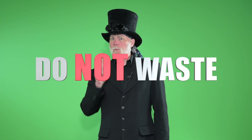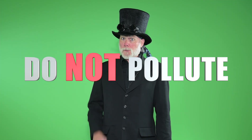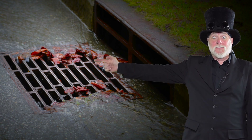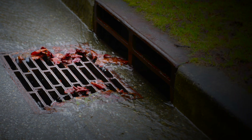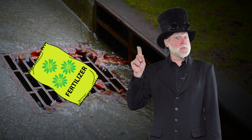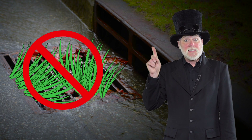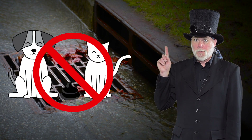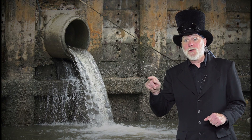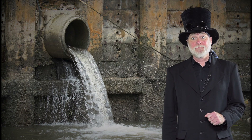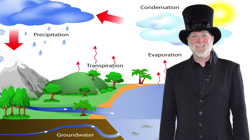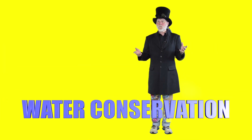So it's really important that we never waste water or pollute it. For example, nothing should ever be dumped into storm drains — no trash, no motor oil, no fertilizers, no grass clippings, and no pet poop — because that storm drain drains directly into rivers, streams, and oceans, which are part of the water cycle.